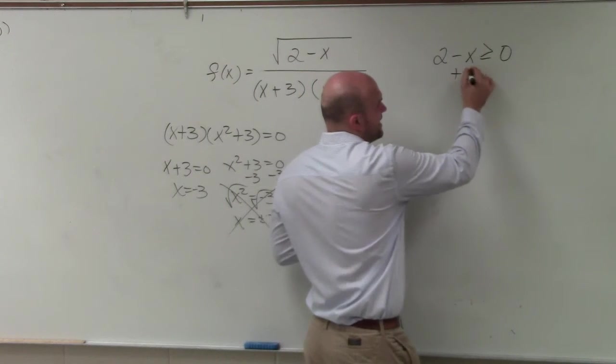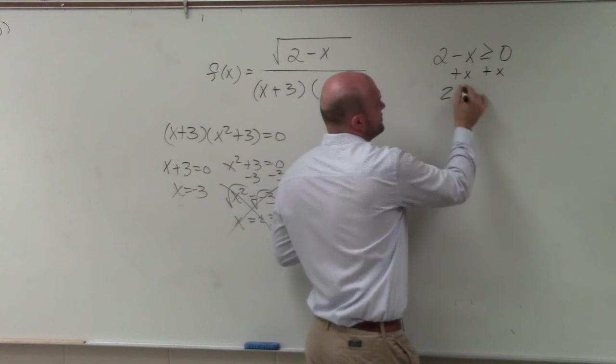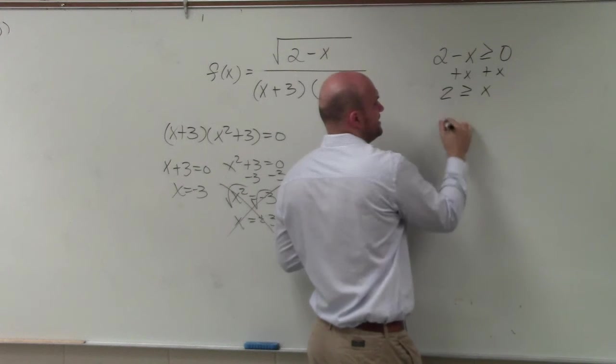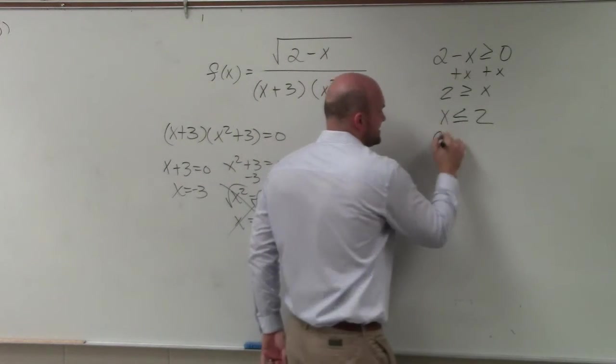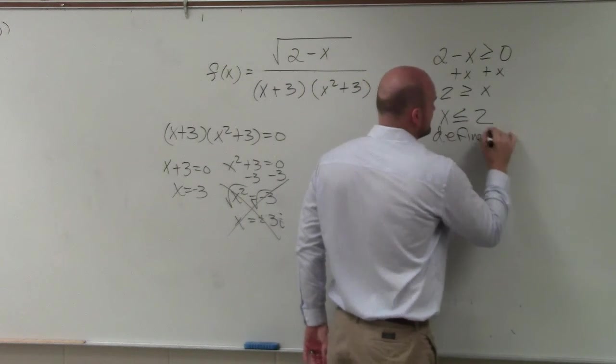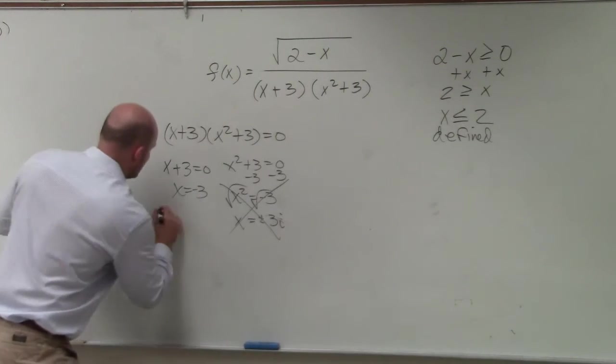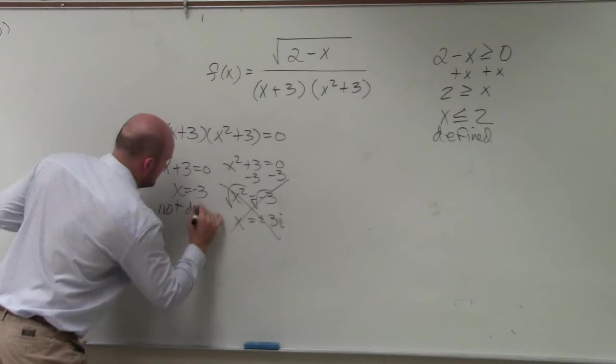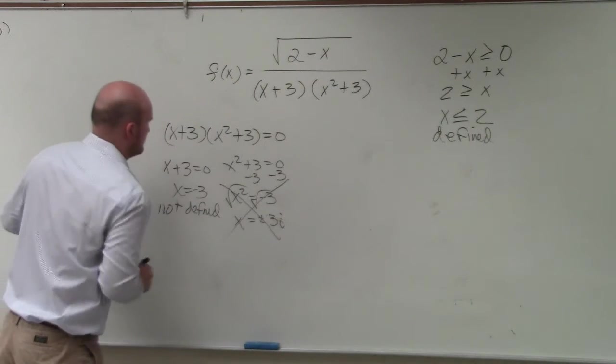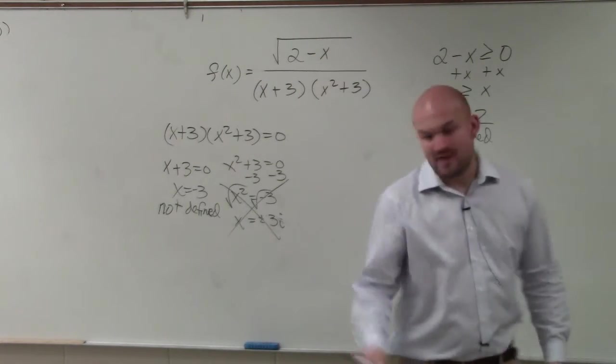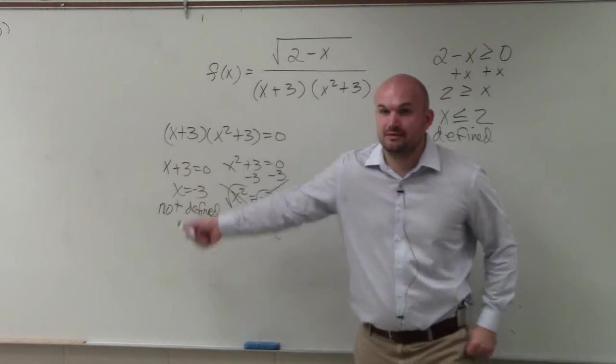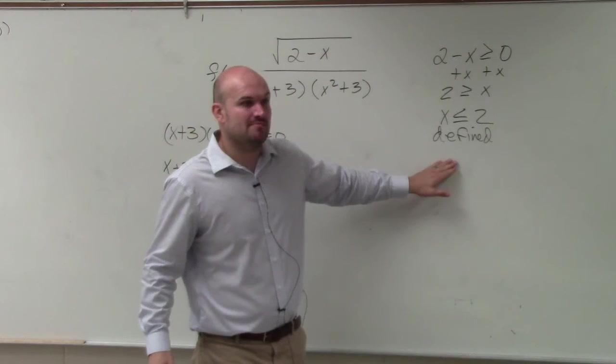When I go ahead and solve, I just add x to the other side. I have 2 is greater than or equal to x. Rewrite that as x is less than or equal to 2. So this is telling me what is defined. This tells me what is not defined. Does everybody see that? That tells me what the number can't be. This tells me what the numbers can be.